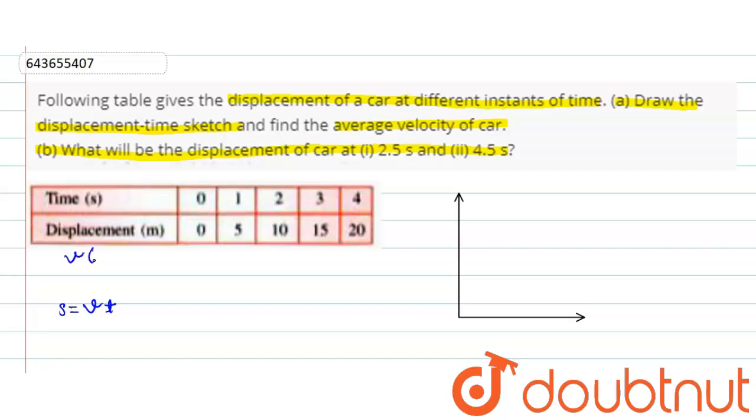So the velocity in meters per second for each time interval comes out to: V equals 0 at T equals 0, and for T equals 1 second it comes out to be 5, for T equals 2 it comes out to be 5, for T equals 3 again 5, and for T equals 4 again 5. So from here we can judge that this is a uniform motion.